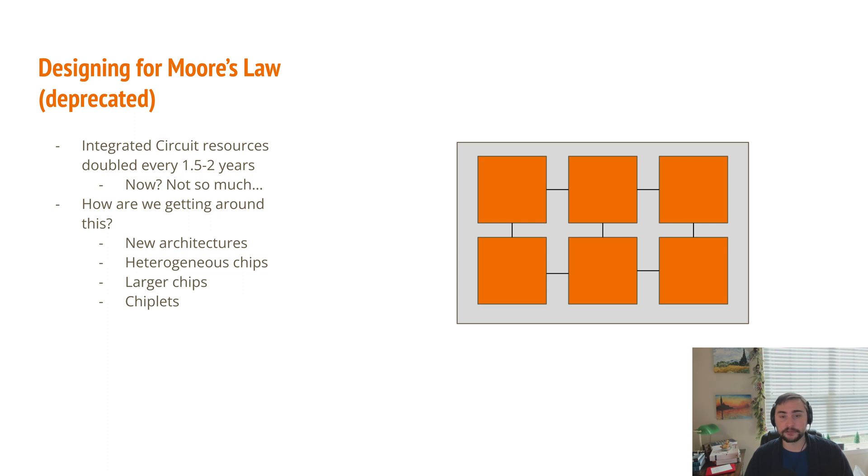We also are seeing very heterogeneous chips come out. So instead of having uniform processor cores, we're having chips that have lots of memory integrated onto the chip and heterogeneous cores. So you'll have big cores and also small cores for different tasks and for power reasons. We also are seeing larger and larger chips. So it's no longer just having double the resources in the same area. Now we're just increasing the area of a lot of our chips. And where that's not possible, we're also using things like chiplets now.